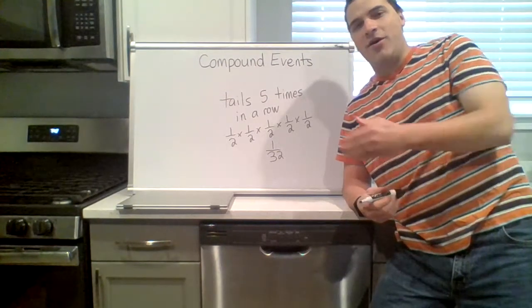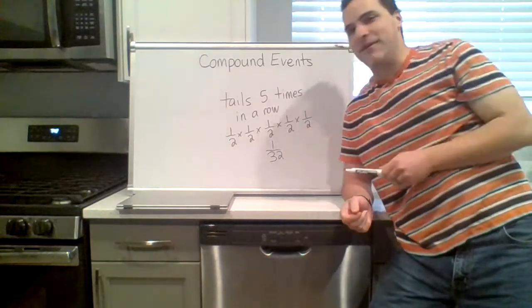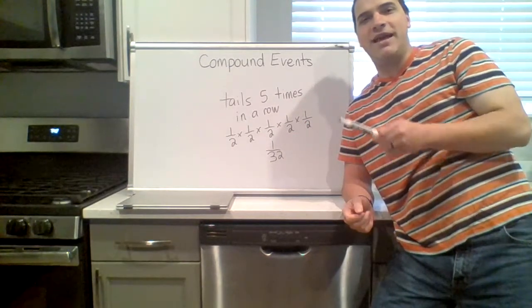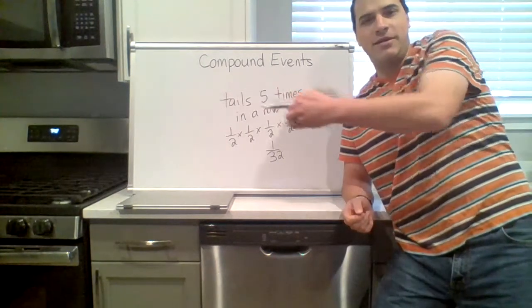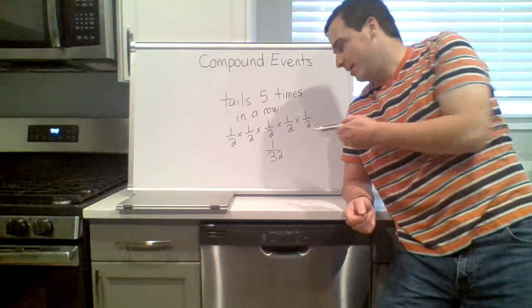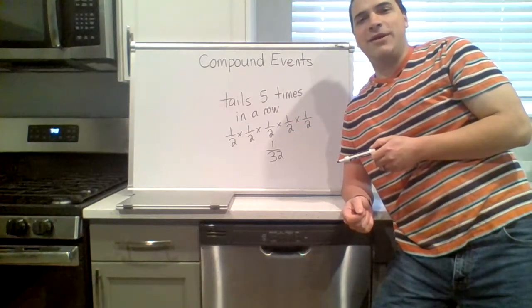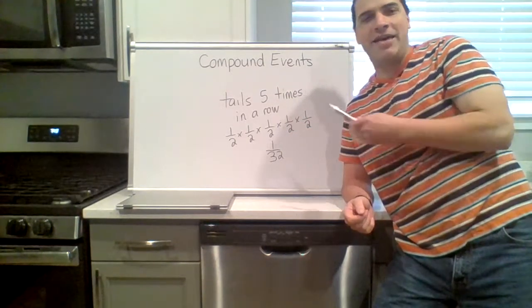But keep in mind also, just because it's all tails, this is the same probability if it had been all heads or heads, heads, tails, heads, heads. Every single one of those unique outcomes is one in thirty-two. It's just that we have a bias to think that it has to be every other time.